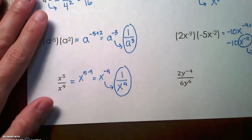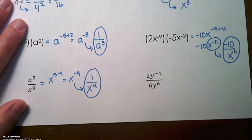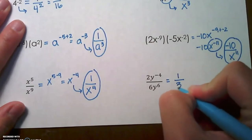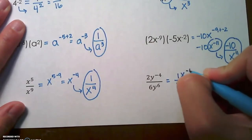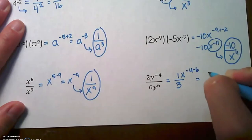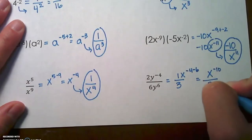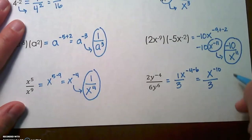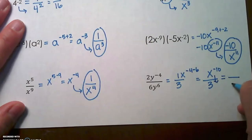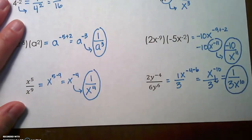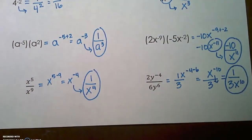In our last example, the 2 and the 6 can be simplified to 1 third. x to the negative 4 minus 6 is going to be 1 times x to the negative 10 over 3. Then that x has to move to the denominator to change the sign on the exponent to positive. The 3 stays, and we end up with a 1 in the numerator. Those are some challenging problems with negative exponents. Good job.